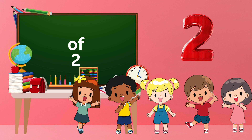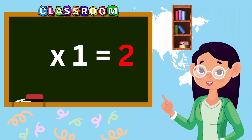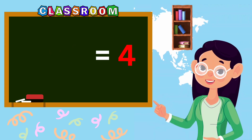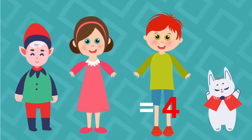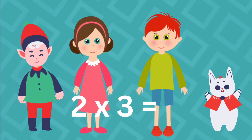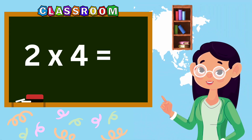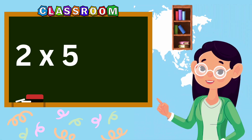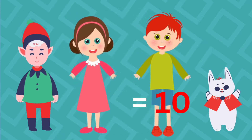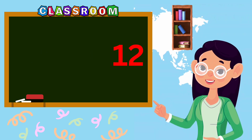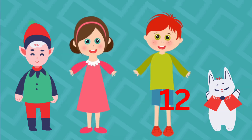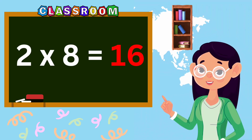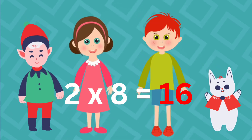Table of Two. Two ones are two. Two twos are four. Two threes are six. Two fours are eight. Two fives are ten. Two sixes are twelve. Two sevens are fourteen. Two eights are sixteen.